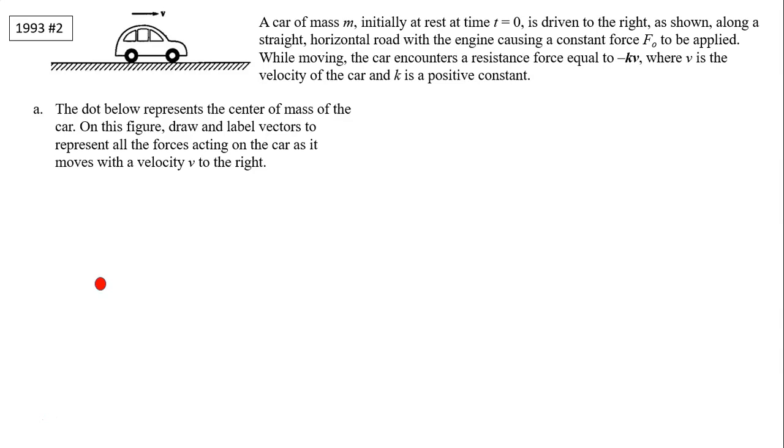A car of mass M initially at rest at time t equals zero is driven to the right as shown along a straight horizontal road with the engine causing a constant force F0 to be applied. While moving, the car encounters a resistance force equal to negative kv where v is the velocity of the car and k is a positive constant. That means that its resistance force is opposite in the direction as F0.